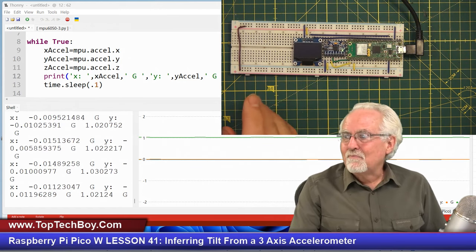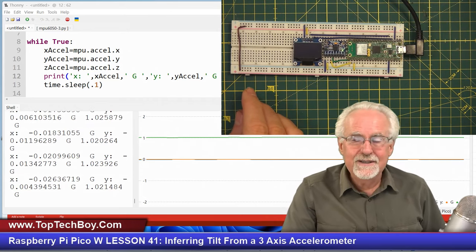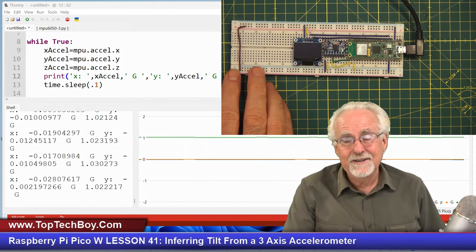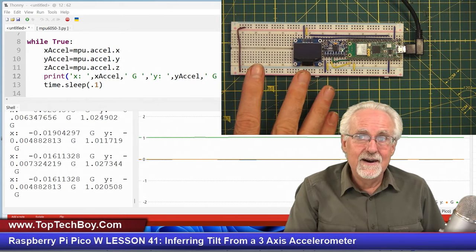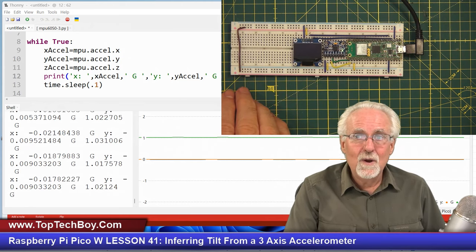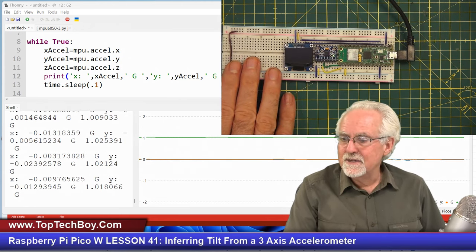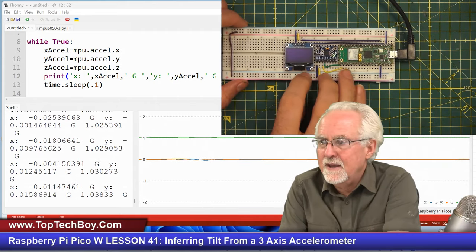What you have to see is even though I am sitting here in my Aaron chair in my office, I'm pulling one g in the z-axis. Does that make sense? I think you can see it pretty clear here in the data.